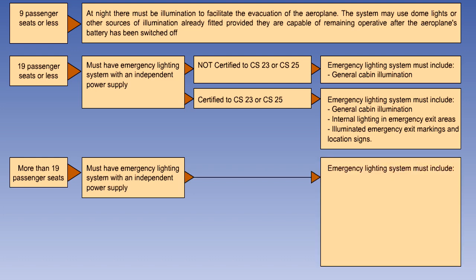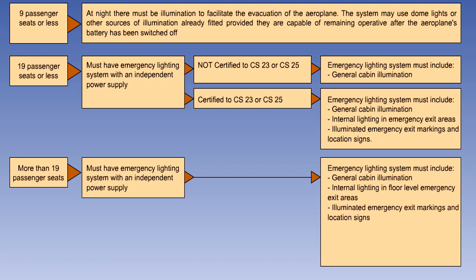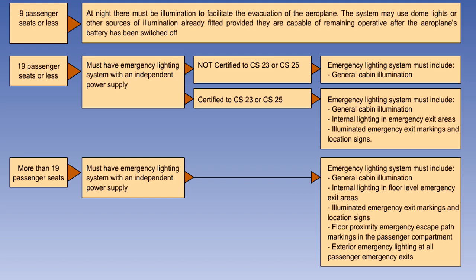Aeroplanes with an approved passenger configuration of more than 19 passenger seats must have an independent emergency lighting system, which includes general cabin illumination, internal lighting in floor-level emergency exit areas, illuminated emergency exit markings and location signs, floor-proximity emergency escape path markings in the passenger compartment, and exterior emergency lighting at all passenger emergency exits.